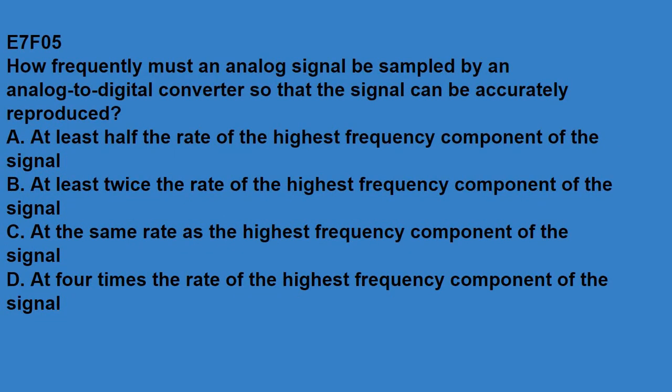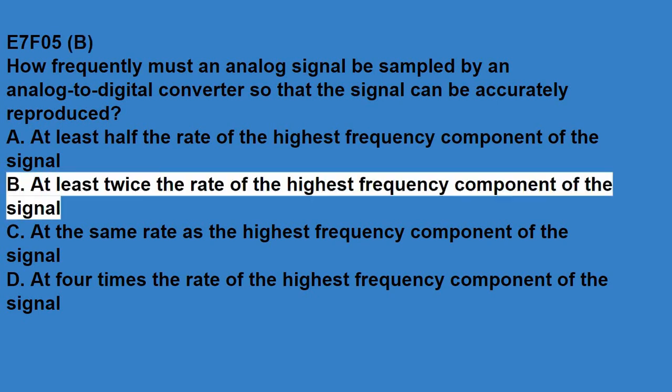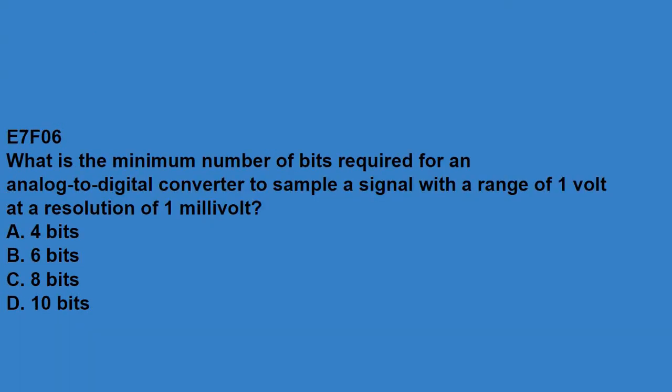E7F05, how frequently must an analog signal be sampled by an analog to digital converter so that the signal can be accurately reproduced? At least twice the rate of the highest frequency component of the signal. E7F06, what is the minimum number of bits required for an analog to digital converter to sample a signal with a range of 1 volt at a resolution of 1 millivolt? That answer is 10 bits.